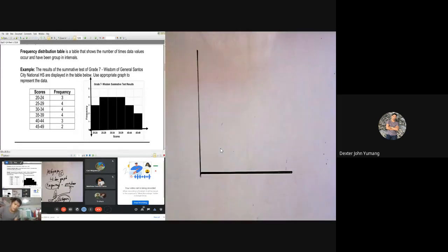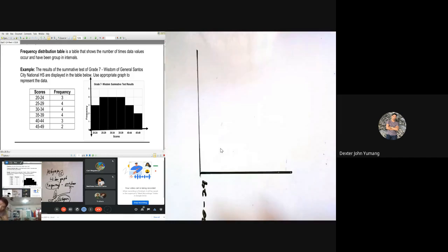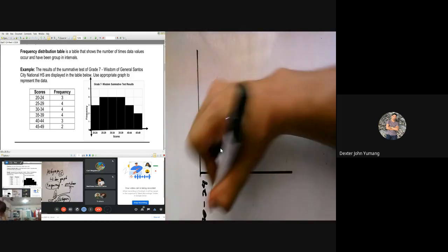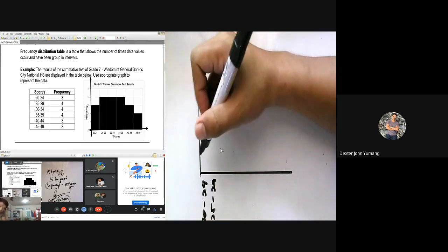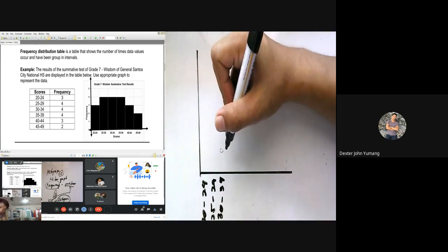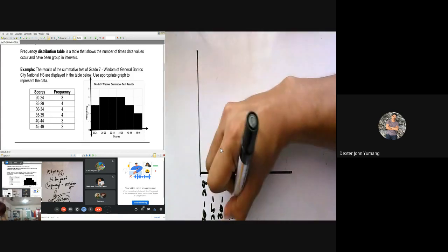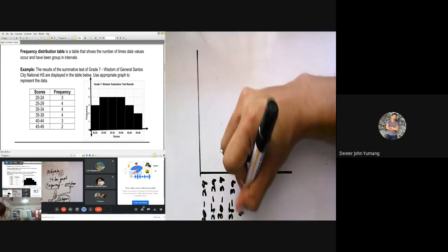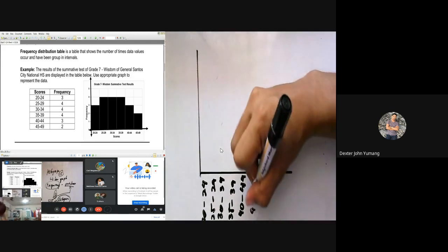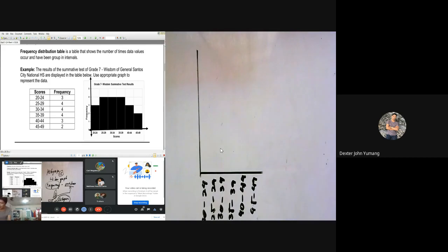Next, sa frequency distribution table nakalagay dyan is 20 to 24. Yan po yung ilalagay natin dito: 20 to 24, pwede po bang pahiga, pwede po kung magsakto. Next, the next number is 25 to 29. The next one is 30 to 34. The next one is 35 to 39. The next one is 40 to 44. The next one is 45 to 49. Yung sobra purahin natin. Now ano po ang tawag nito? Itong numbers na ito, ang tawag po nito interval. Ibig sabihin po ng interval, ang interval po is gumagamit ng group. For example, 20 to 24, the group of 20 to 24, yan po yung interval. The group of 25 to 29, yan po yung interval.